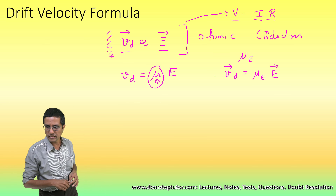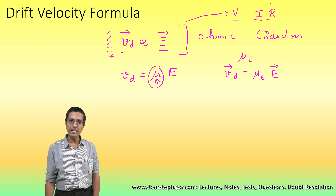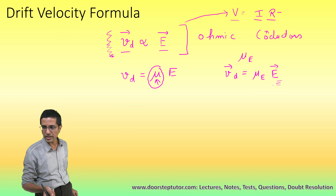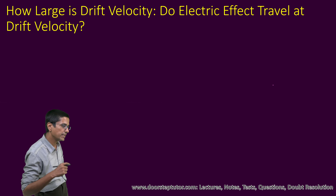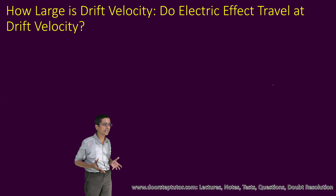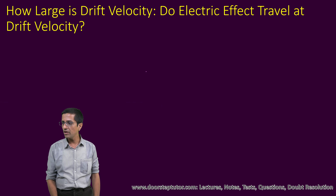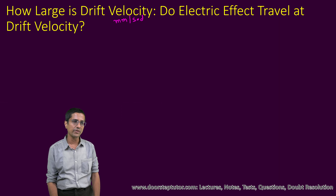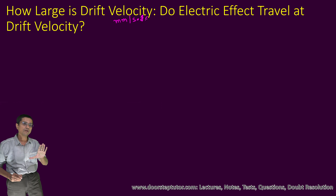We will be deriving V = IR based on this equation in a subsequent class. Now, what is the typical magnitude of drift velocity? The typical order of drift velocity is millimeters per second.